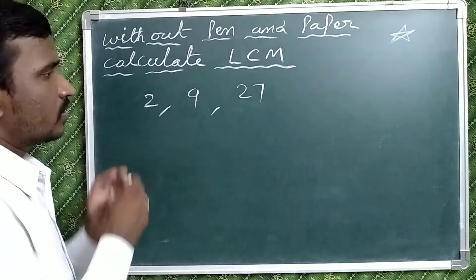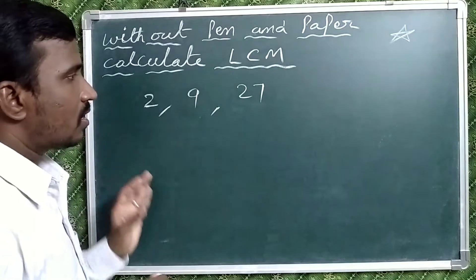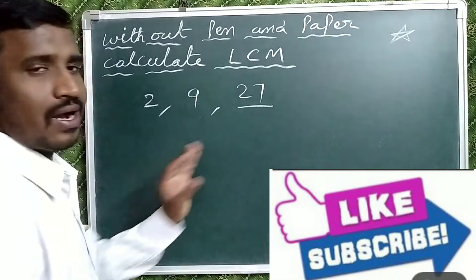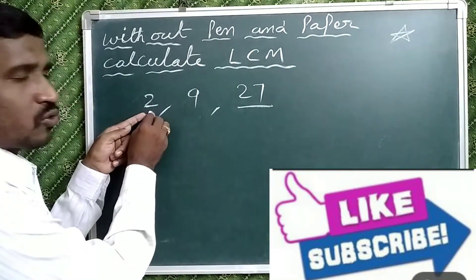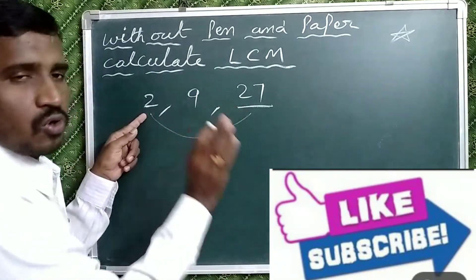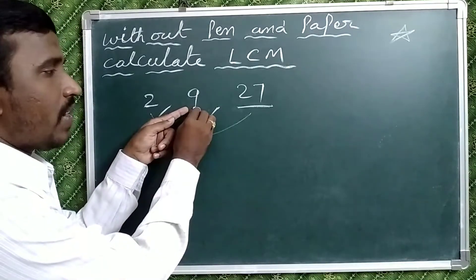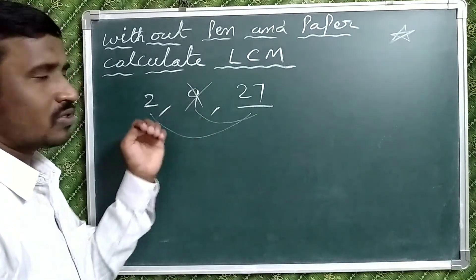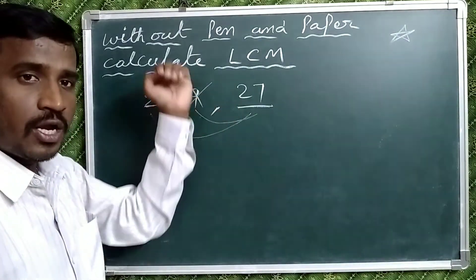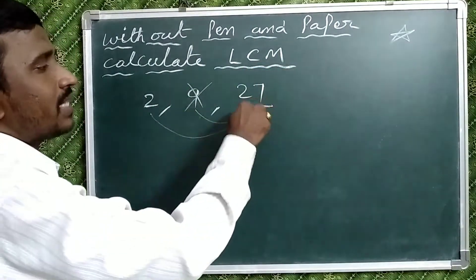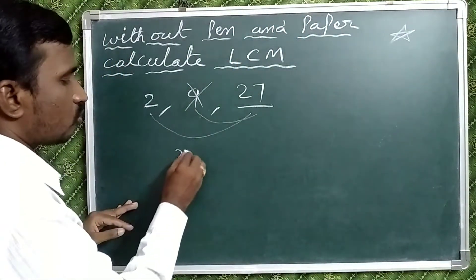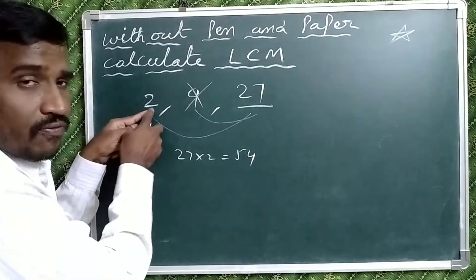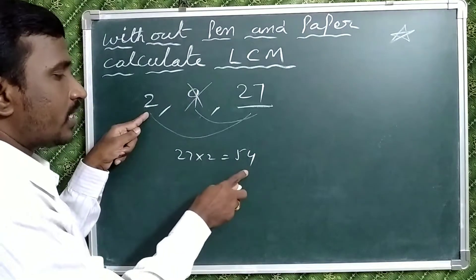Now observe another example with the numbers 2, 9, and 27. Select the highest number — here 27 is the highest. Check: 2 is not a factor of 27, but 9 is a factor of 27, so 9 is cancelled out. Now take the next multiple of the highest number: 27 into 2 equals 54. Now check whether 2 is a factor of 54 — yes, 2 is a factor of 54. So the LCM will be 54.